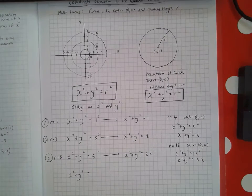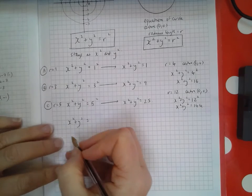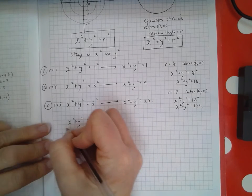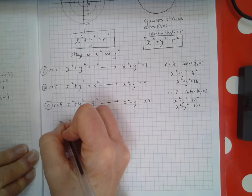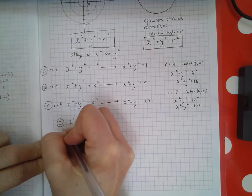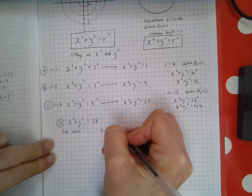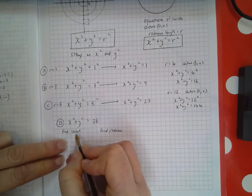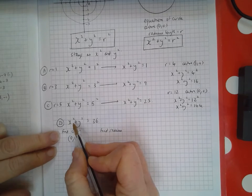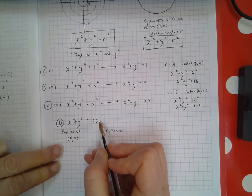Now sometimes you're given the equation and asked to find the center and radius. Say we have circle D: x² + y² = 36. Find the center and radius. The center is (0,0) because any circle with equation x² + y² = a number has center (0,0).